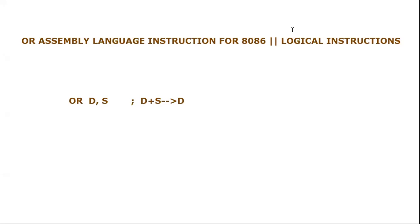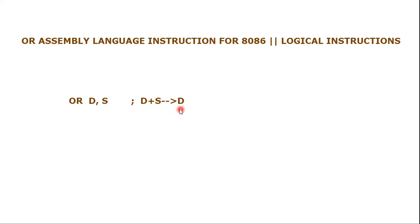Assalamu alaikum everyone. In this video tutorial we are going to learn the OR assembly instruction for the 8086 microprocessor. It is part of the logical instructions. This instruction provides a logical OR operation. The format of this instruction is: OR is the keyword, D is the destination operand, comma, S is the source operand. The OR operation is performed between them, and the result is stored in the destination operand.